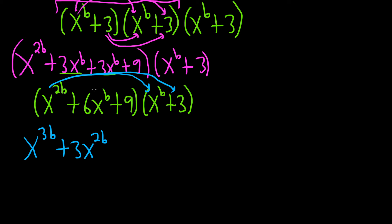Then we go to the next one. And 6x to the b times x to the b is 6x, well b plus b is 2b. 6x to the b times 3 will give us 18x to the b.